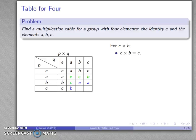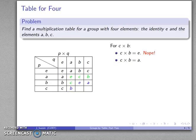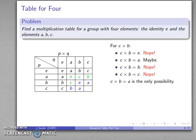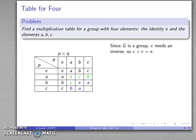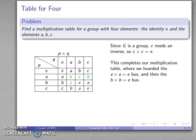For C times B: it can't be E because B inverse is already B; C times B equals B or C is ruled out; so C times B equals A is our only possibility. Finally, because G is supposed to be a group, C times something has to give you the identity, so C times C must equal E. This completes our multiplication table, where we boarded the A×A=E bus and then the B×B=E bus. There's our multiplication table under these two assumptions.